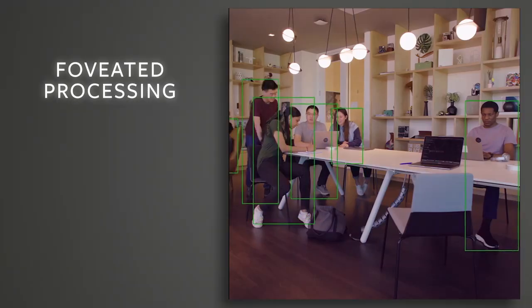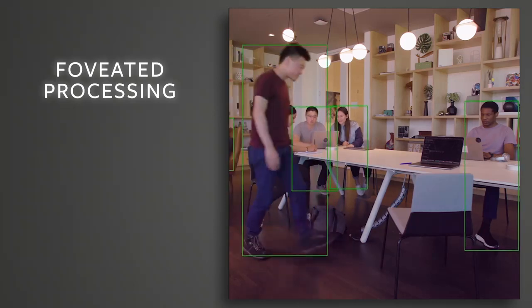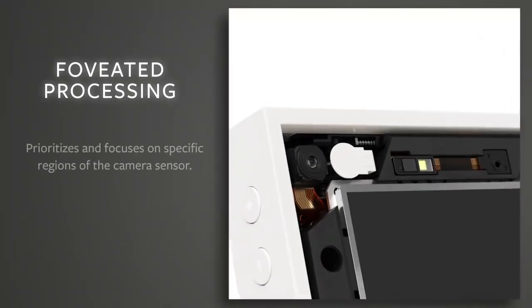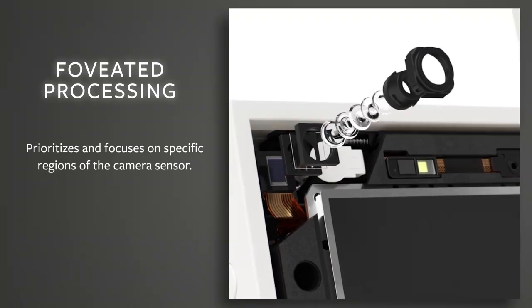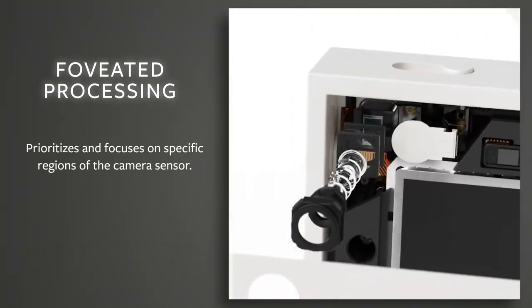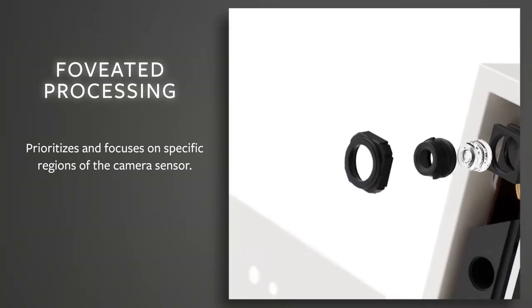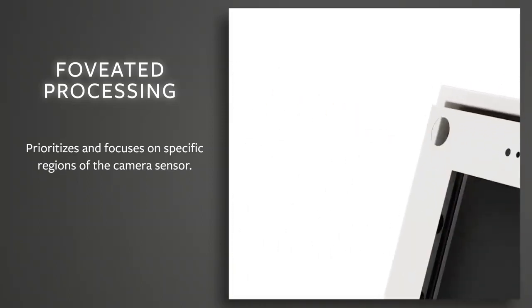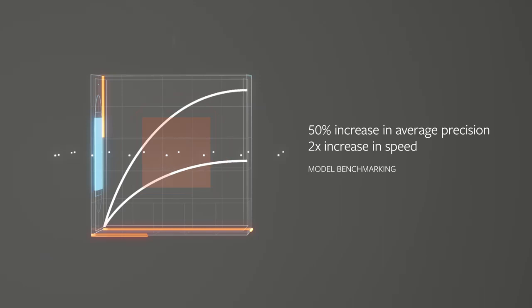Foveated processing is a technique that allows us to enhance computer vision technologies by focusing our processing onto specific regions of the camera sensor to increase both sensitivity of the algorithm without the overhead of massive compute. We've used it to build something that we call adaptive background modeling, which allows us to better distinguish people that we see in the environment versus things like posters or pictures on the wall. With foveated processing, we can now do this with much higher accuracy and almost twice as fast as we did before.